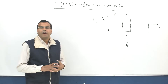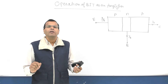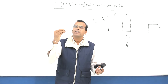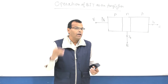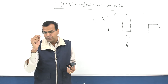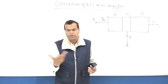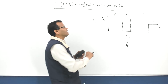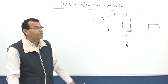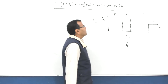Just for understanding the operation, I will be taking a PNP transistor. The reason being: when I talk about flow of holes in PNP BJT, that is nothing but the direction of current as well, because current flows in the direction of holes. So that is why I am taking PNP transistor just for better understanding and better explanation. Otherwise you can discuss NPN transistor as well.